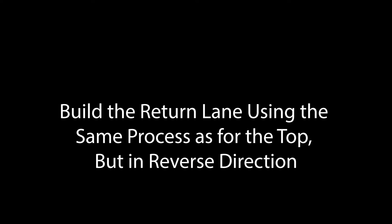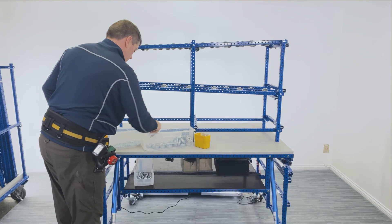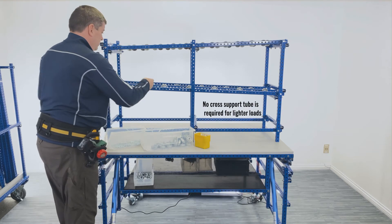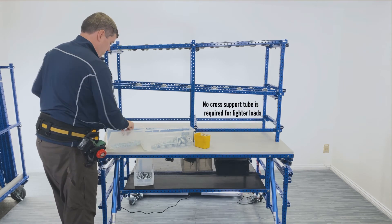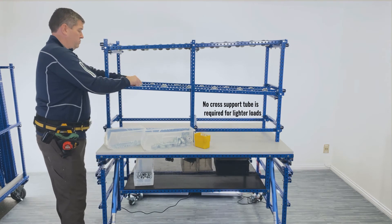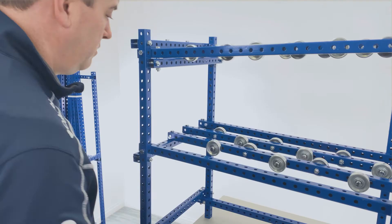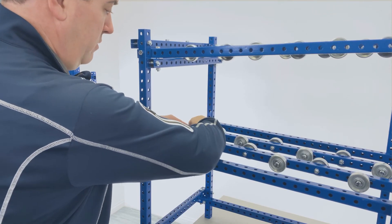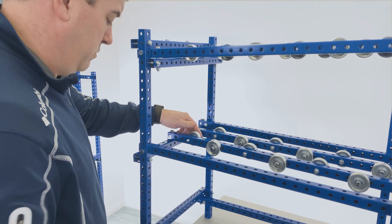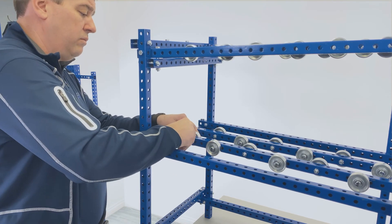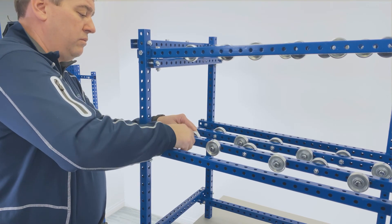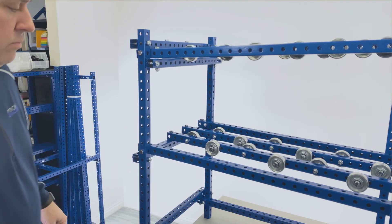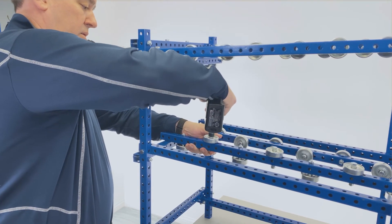Build the return lane using the same process as for the top, but in reverse direction. No cross support tube is required for lighter loads. Install skate wheels onto rails using the flow rack as a support structure. Note that skate rail is still loose to allow for skate wheels to be tightened with the ratchet gun.